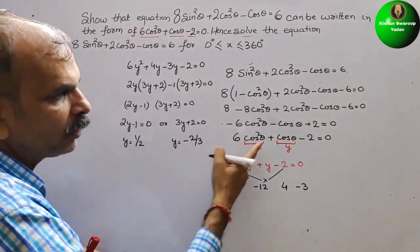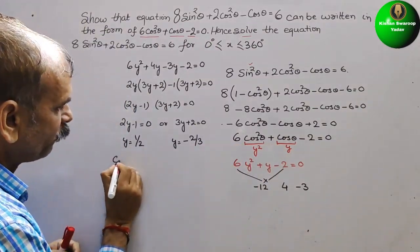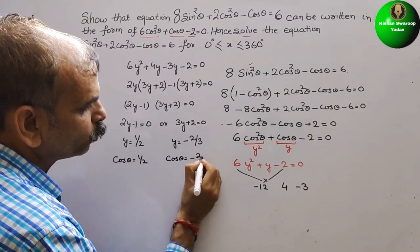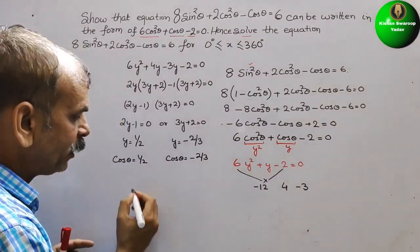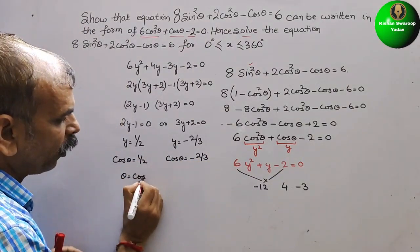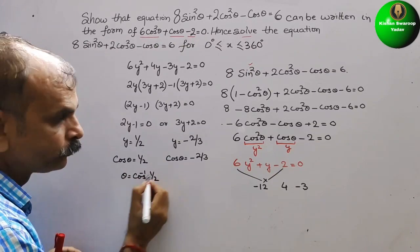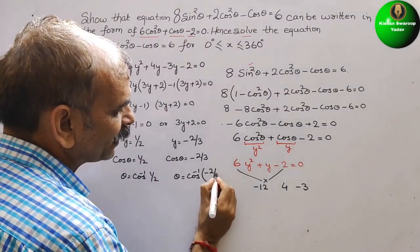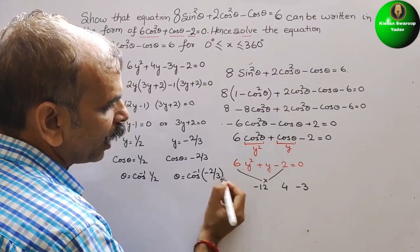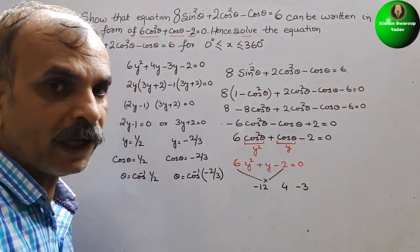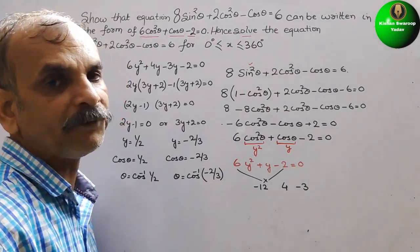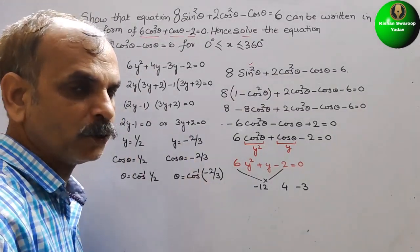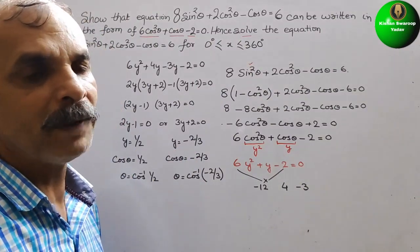Since y = cosθ, we have cosθ = 1/2 or cosθ = -2/3. For cosθ = 1/2, θ = cos⁻¹(1/2). From standard tables, cos 60° = 1/2, so θ = 60°.